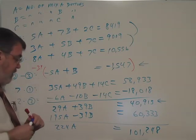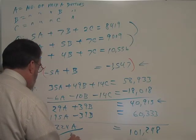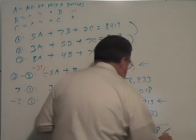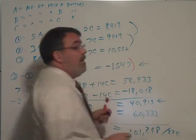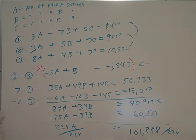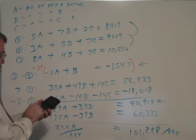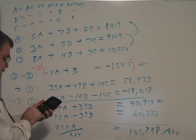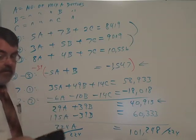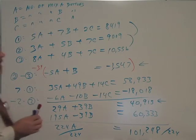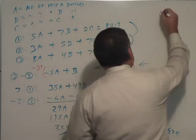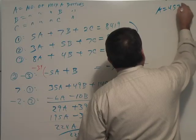So here's the big moment of truth. I'm going to divide both these by 224 and I should get the answer for A. So 101,248 divided by 224 is 452 exactly. So A equals 452.